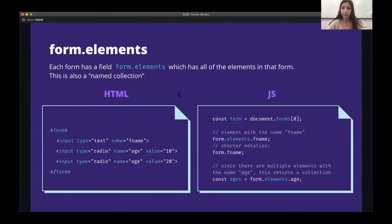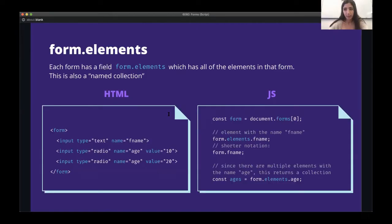So we just saw how to access the HTML form element. Once we have the form, we also want to know how to get the actual input elements in it. Form elements have a field called elements, and form.elements is also a named collection of all the input elements in that form. Being a named collection, we can access elements by both index and by name. Here I have some sample HTML form code — it has an input for first name, or fname, which is a text input.